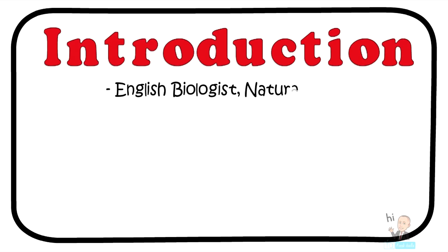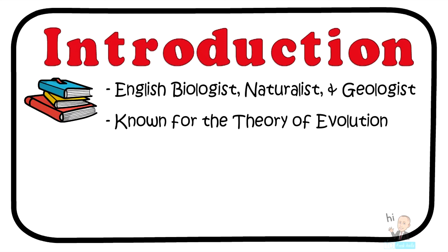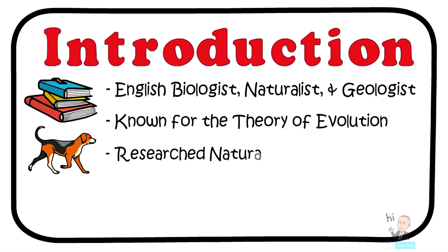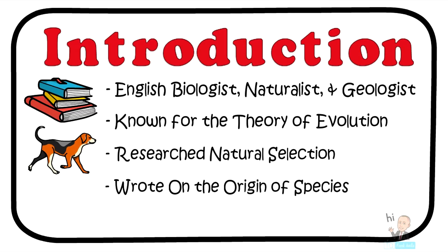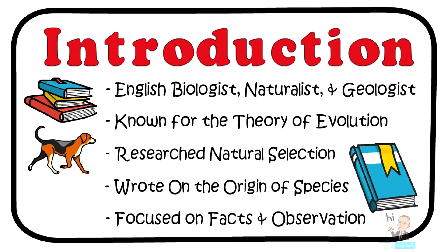Charles Darwin was an English biologist, naturalist, and geologist. He used his expertise in all three areas when producing scientific works. He is best known for the theory of evolution. His theory states that species change over time, they give rise to new species, and they share a common ancestor. Much of his theory stems from his research in natural selection. Charles Darwin wrote the acclaimed book On the Origin of Species, which is considered a fundamental basis for the theory of evolution. As a scientist, Darwin focused on facts and observation. He gathered observable evidence and discounted spirituality and religion in his work.